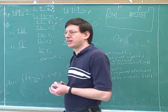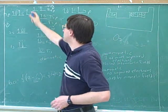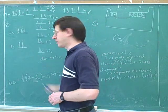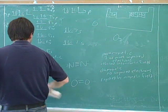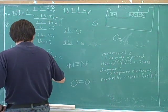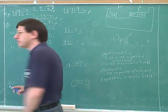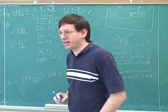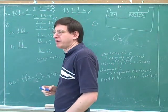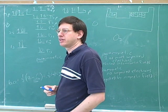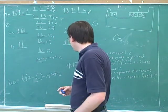Paramagnetic or diamagnetic? Para — paramagnetic, because we have unpaired electrons. So should it be attracted or repelled by a magnetic field? Attracted. Right.